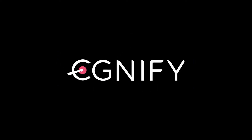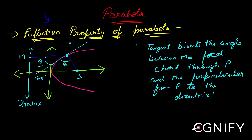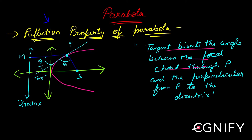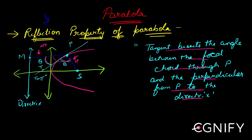Let us look at this unique property called the reflection property of the parabola. This property is also used in lenses in physics. The property says that the tangent bisects the angle between the focal chord through point P — which is the line SP — and the perpendicular from P to the directrix, which is PM. The angle between these two is bisected into two thetas by the tangent.